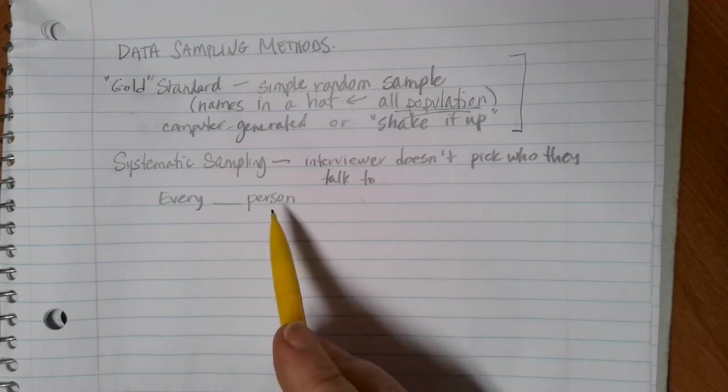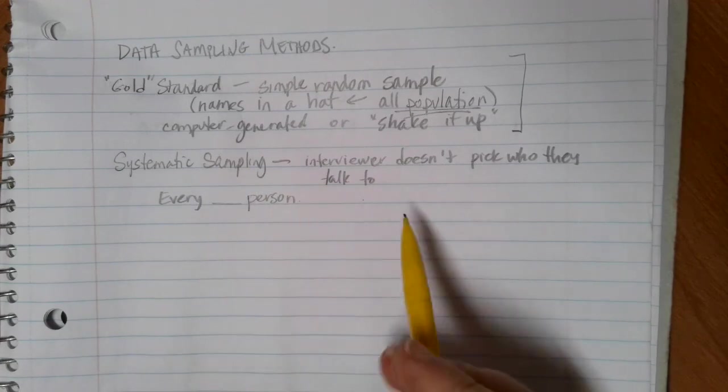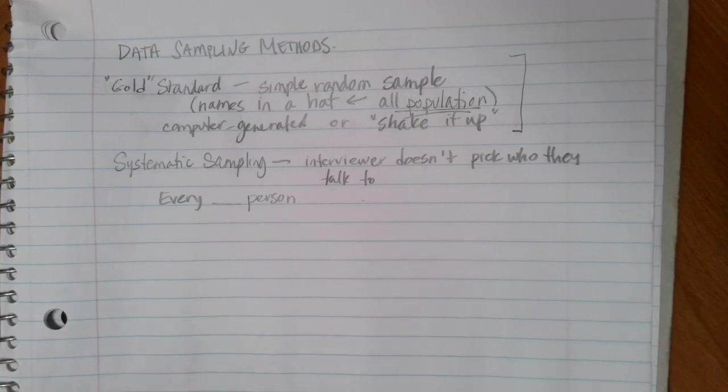So that's an idea of systematic sampling where we come up with a process that we can use to pick those different people as we go through.